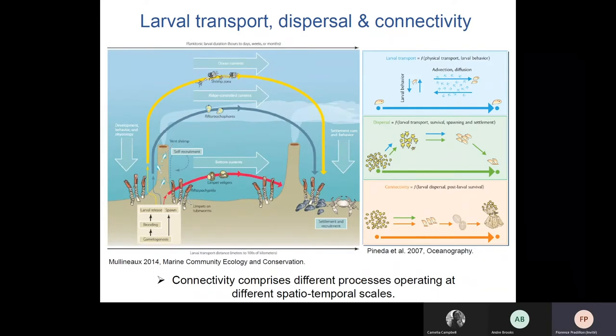I would like to make a brief point on the multiple processes that operate in connectivity. Approaches to understand connectivity are multiple and provide information at different levels targeting some of these processes. Larval transport, shown in the blue box, is the translocation of a larva from one point to another, and it reflects a wide range of behavioral and physical mechanisms such as advection or diffusion, which are variable and operate at different scales.